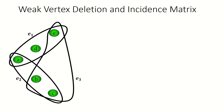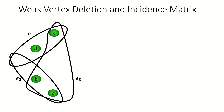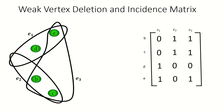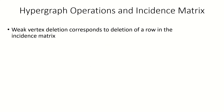Let's look at the relationship between deletions and the incidence matrix with a fixed ordering of vertices and edges. We'll order our columns from least to greatest according to the subscripts of the edges, and order our rows alphabetically. First, find its incidence matrix. Now, here's the result of weak deleting vertex a from this hypergraph. Notice how the new incidence matrix is the same as the old one, except that the row corresponding to a has been deleted. That's the effect that weak vertex deletion has on the incidence matrix — it deletes the row corresponding to the deleted vertex.